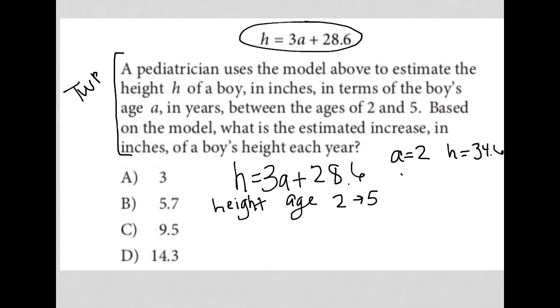And when the boy is 3, so 1 year later, his height would be equal to 9 plus 28.6, which is equal to 37.6.